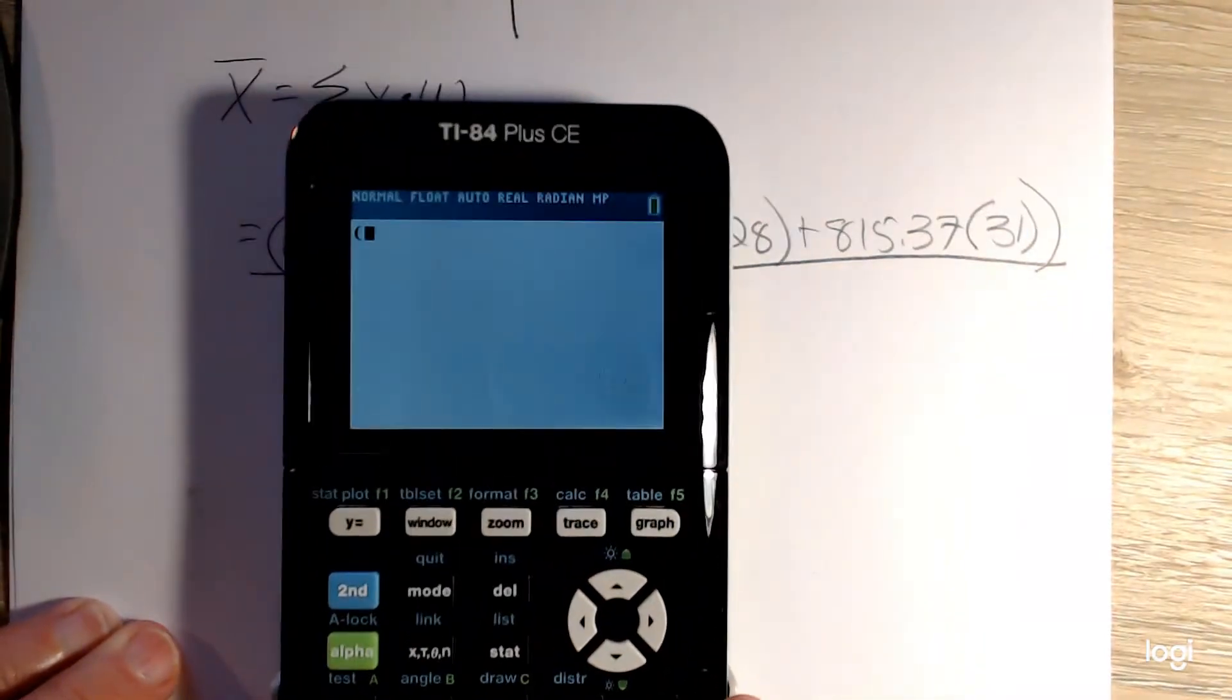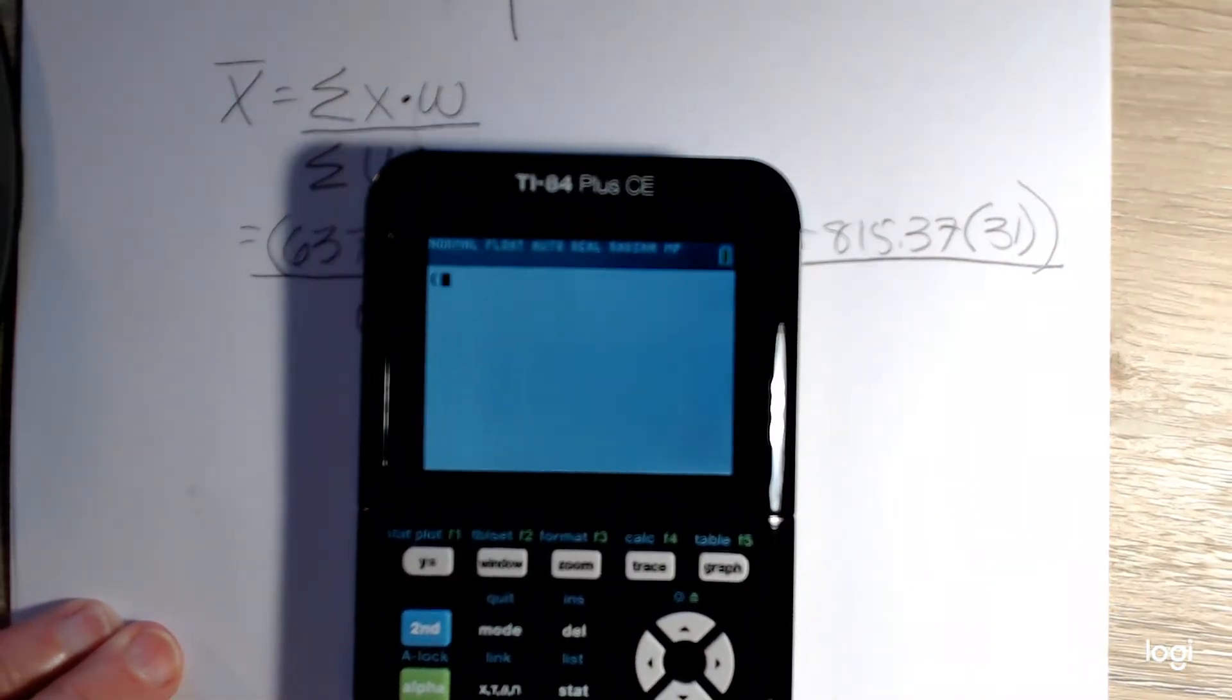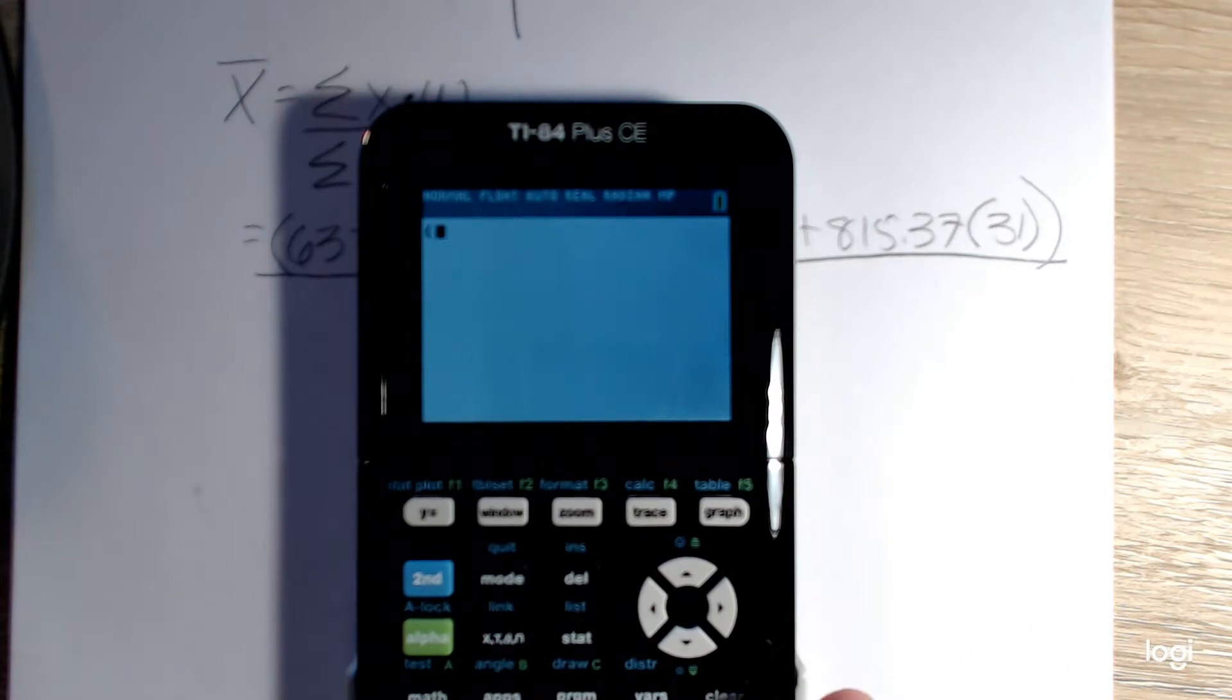Opening up the parentheses, I'm going to input the information literally as seen with the formula. So I have 637.25 times 31 days plus 595.12 times 28 days, again assuming it's not a leap year, plus 815.37 times 31. And I'm going to close that set of parentheses.